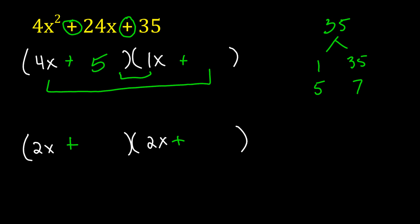4x times 1 is 4x. 35 times x is 35x, and that will not give me 24x. So 1 and 35 can be eliminated for this first group. It might be the case with 2x and 2x, but we'll get to that. Let's try 5 and 7. Let's put a 5 here and a 7 there. 4x times 7 is 28x, and 5 times x is 5x. And that's not going to give me 24x. When I add those together, I get 33. So let's try flipping them around, see if that's any better.